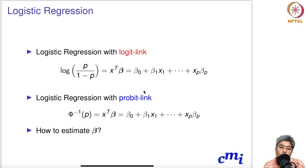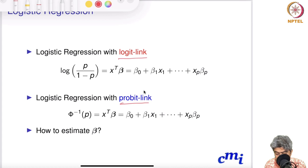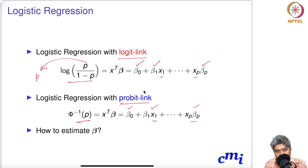So we have logistic regression with two variations: logistic regression with logit link, and logistic regression with probit link. The natural question is how we estimate beta. If we know the value of the betas, all we have to do is plug in xi, which gives us Phi(xi-transpose beta) or log(p / (1 - p)), and from there we can estimate p — the probability that yi equals one. But we have to estimate beta first.